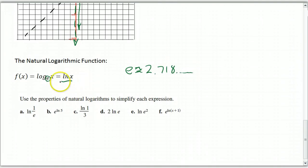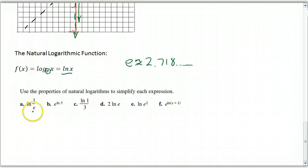So lots and lots of things use logarithmic functions that are base E. So instead of writing that all the time, we just use a shorthand and say it's LN of X. They work just the same as any other logarithm. So let's simplify these expressions, okay?